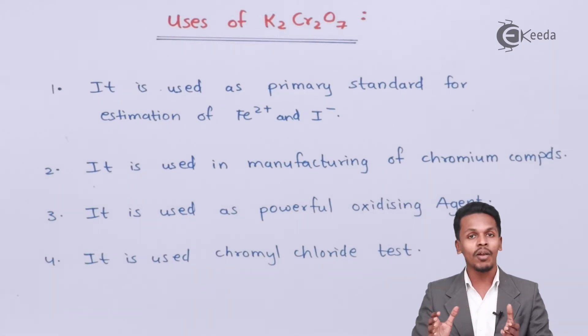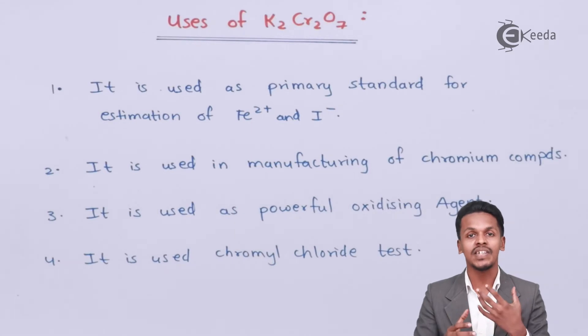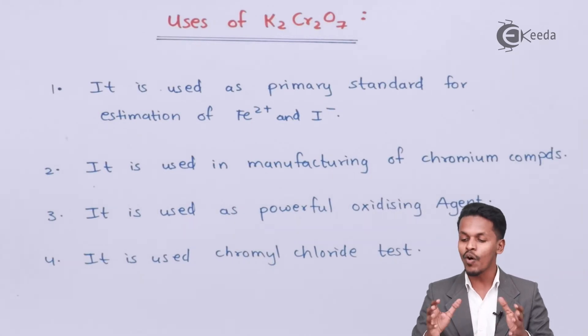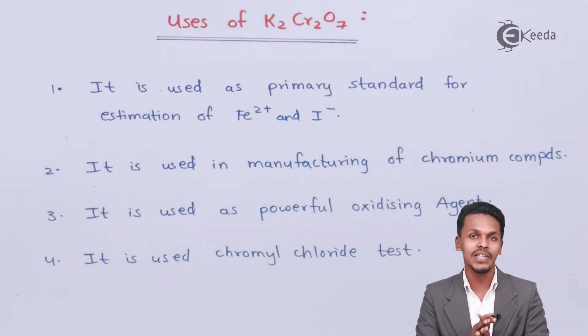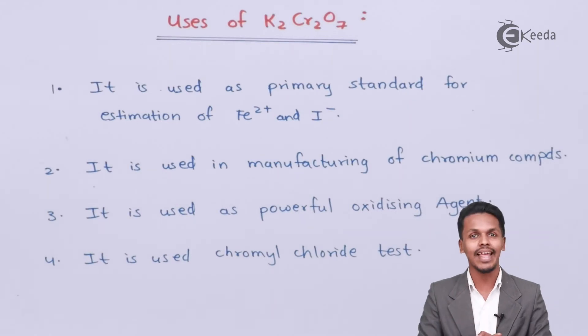Additionally, K₂Cr₂O₇ is used in the preparation of certain dyes and pigments. These are the main uses of potassium dichromate, K₂Cr₂O₇.